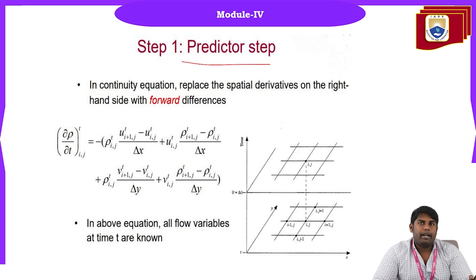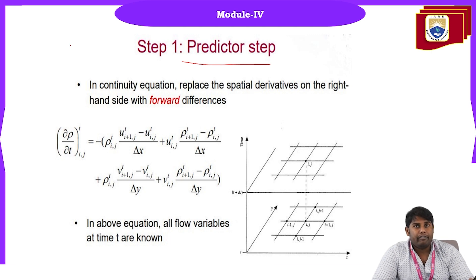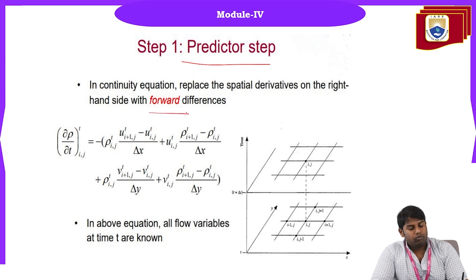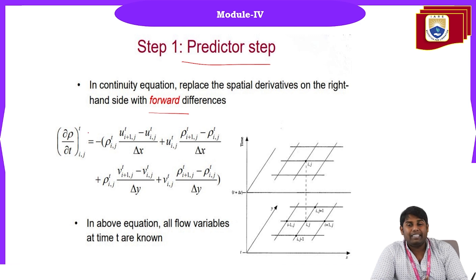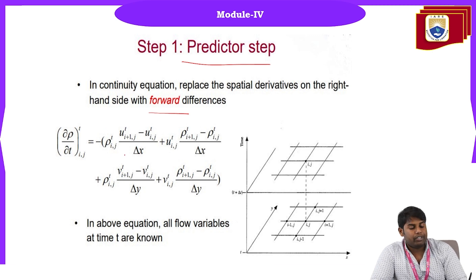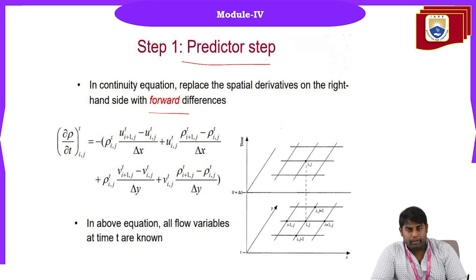MacCormack's method has two steps: first the predictor step, then the corrector step. In the predictor step, we initially predict the value using the finite difference forward method. For ∂ρ/∂t from the continuity equation, all derivative terms in the continuity equation are replaced using the forward difference method.